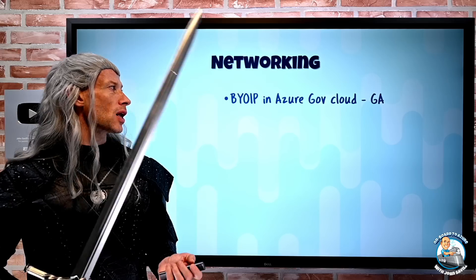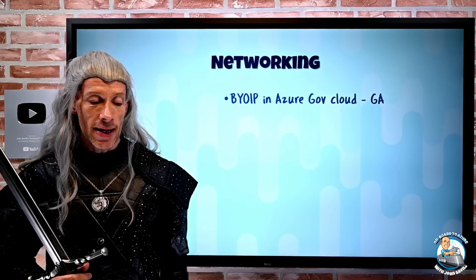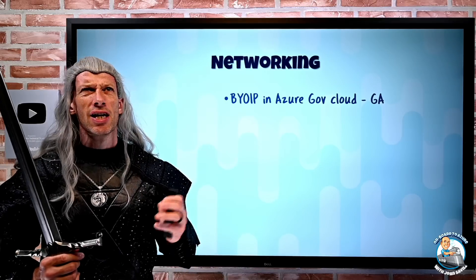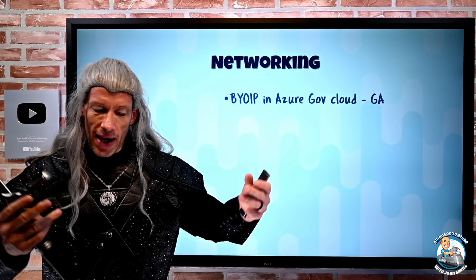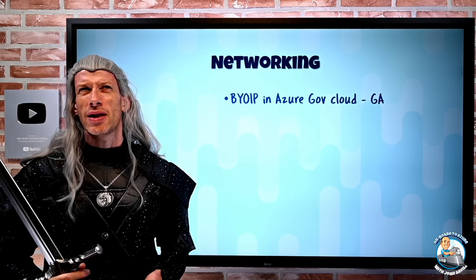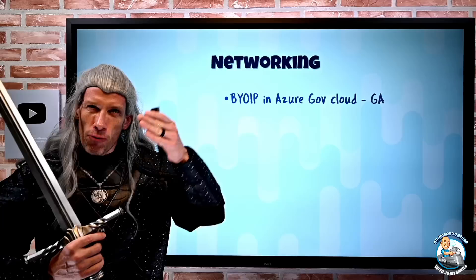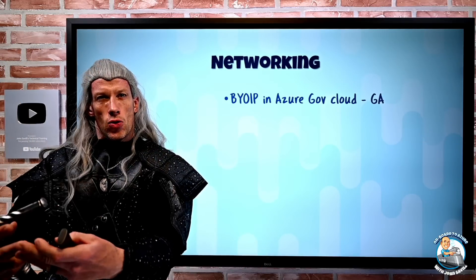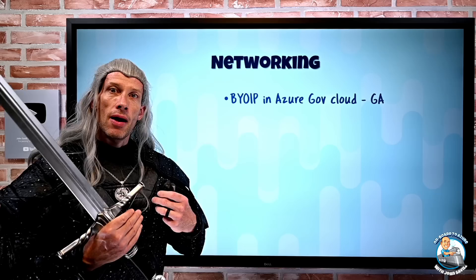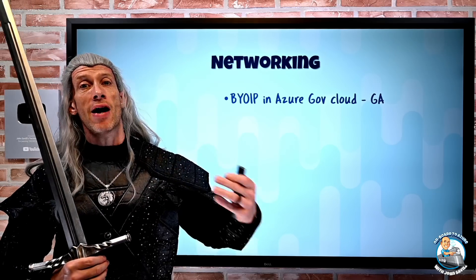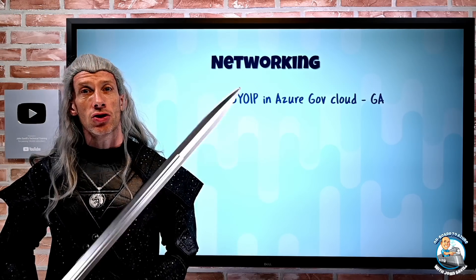On the networking side, Bring Your Own IP is now extended to Azure Gov. This is IPv4 and IPv6 — if it's IPv6, it's a slash 46 to slash 48, and I break that into slash 64 regional subnets. IPv4 is between a slash 21 and a slash 24. I can now actually bring my own IPs through a whole set of processes to light them up for your services — so this is about bringing publicly routable IP addresses from some range you have and using those for your Azure services.